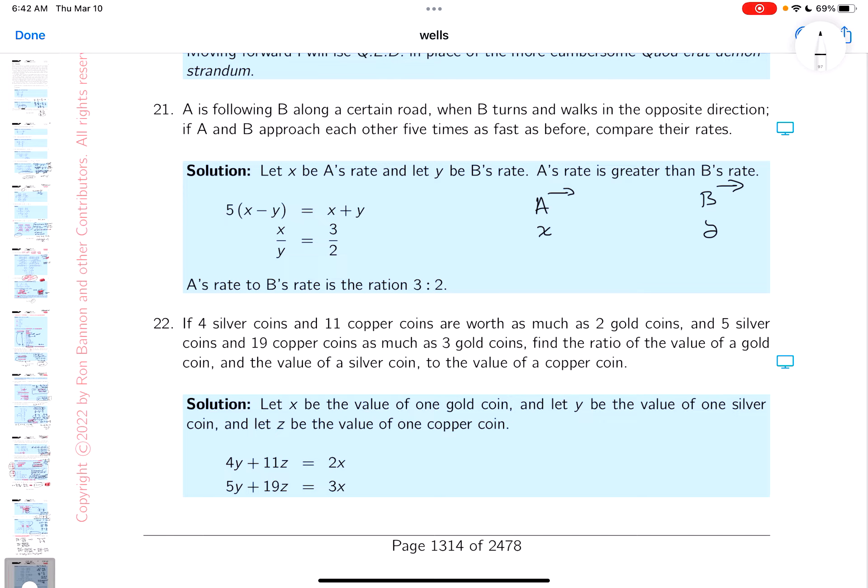What happens is B turns around in the opposite direction. What it goes on to say, if A and B approach each other five times as fast as before. So if they're going forward, the rate of approach would be X minus Y. The rate of approach would be X minus Y.